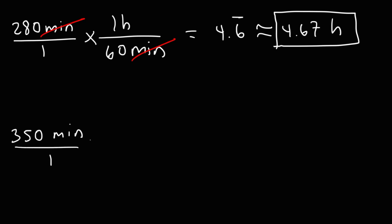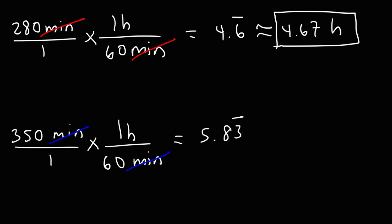For the next one, we follow the same pattern: multiply by 1 hour per 60 minutes. So it's 350 divided by 60, and that is 5.83 repeating. So that's it for those two examples.